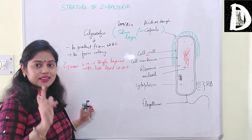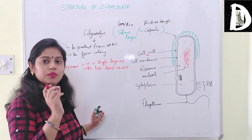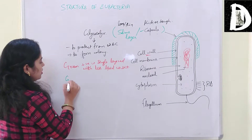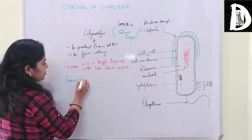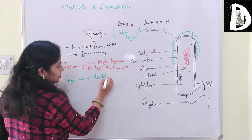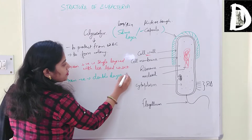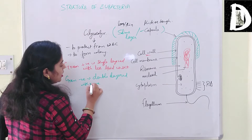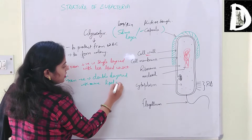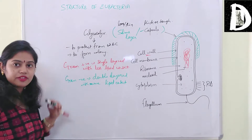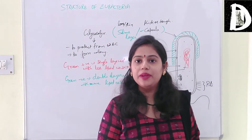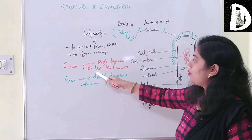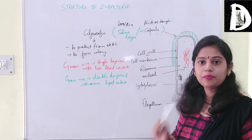In gram negative bacteria, a double layer cell wall is present with more lipid content. So gram positive has a single layer with less lipid, while gram negative has a double layer with more lipid content.